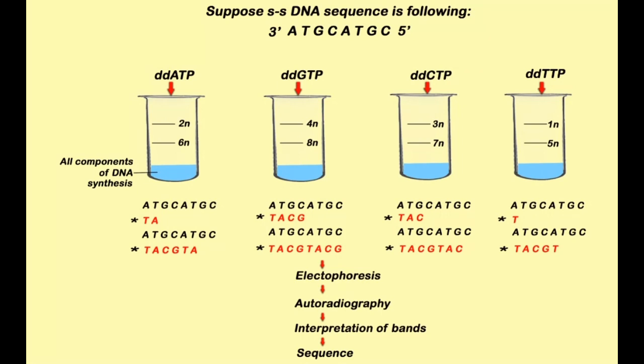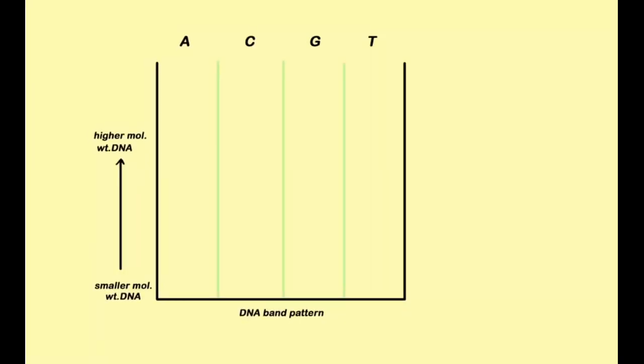Once you have got all these fragments in 4 different tubes, then what we have to do - we have to do the electrophoresis. And afterwards we will do the autoradiography to visualize the bands. Then we will do the interpretation of bands and so we will get the sequence at the end.